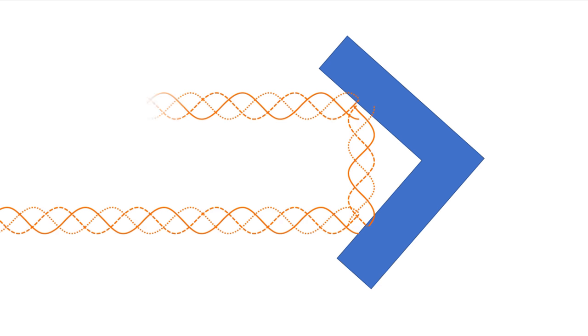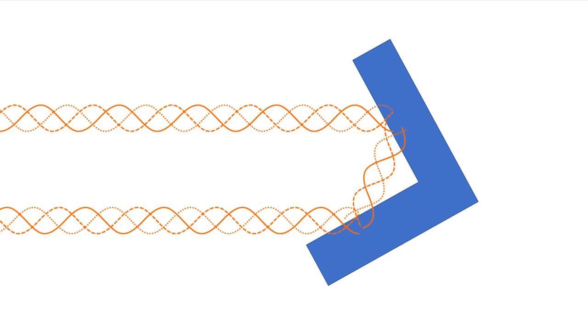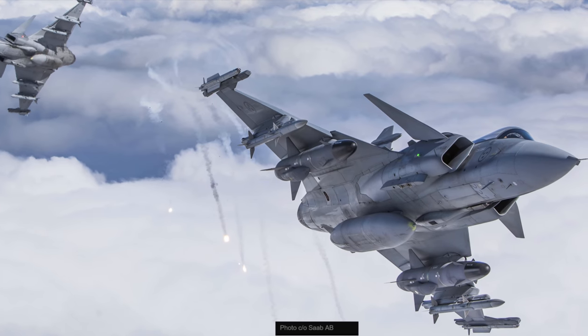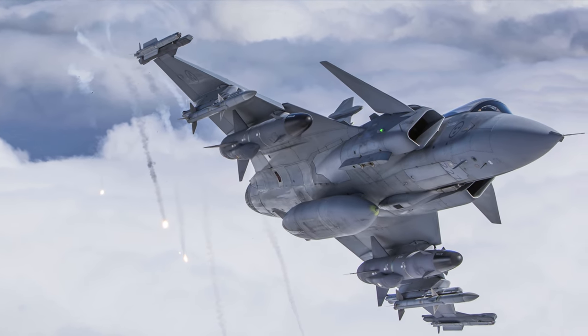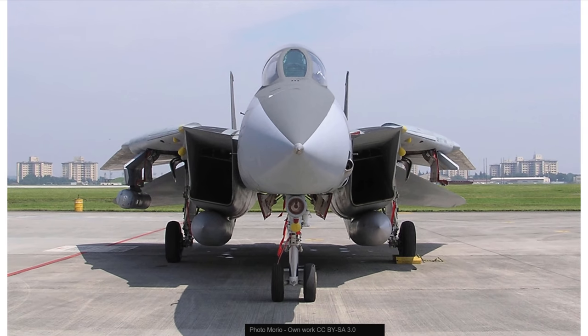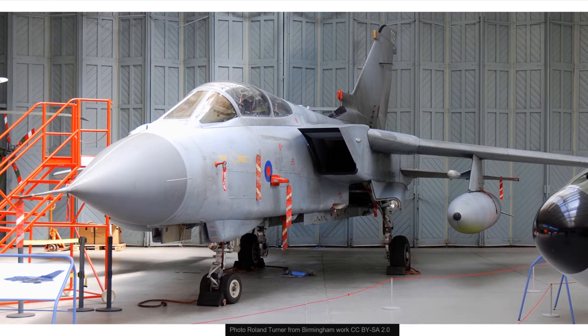Another element that you won't find on a stealth plane is 90-degree angles. A 90-degree angle has the property of always reflecting back the radiation toward the direction where it came from, which is exactly what you don't want. This is the reason why external stores are so harmful to stealth. The pylons under the wing are vertical and they are also 90 degrees with the wing. Canards are not particularly stealthy because they form an angle with the fuselage which is usually close to 90 degrees. Classic wedge intakes are very efficient but definitely not stealthy because of all those 90-degree angles.